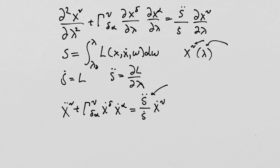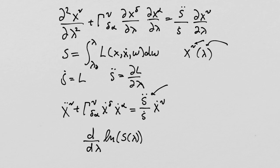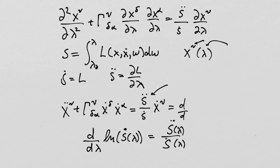Another slight simplification that does show up in some texts is using the logarithmic derivative. This is a basic fact definitely worth remembering because it shows up a lot. If I have a function of lambda and take the derivative of the logarithm of that function, that is the derivative of the function with respect to lambda divided by the function. So I could write this as d by d-lambda of log s times x-dot-nu, and frequently you do see the right-hand side written in that way.